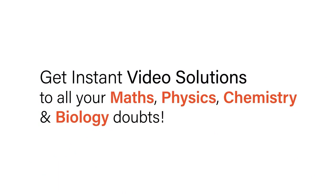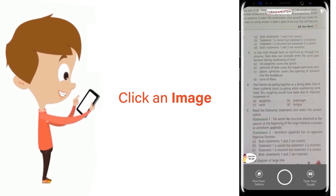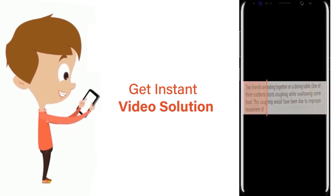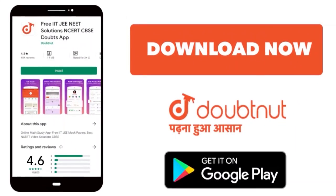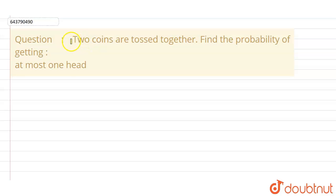With Doubtnet, get instant video solutions to all your maths, physics, chemistry, and biology doubts. Just click the image of the question, crop the question, and get instant video solution. Download Doubtnet app today. Our question is: Two coins are tossed together. Find the probability of getting at most one head.